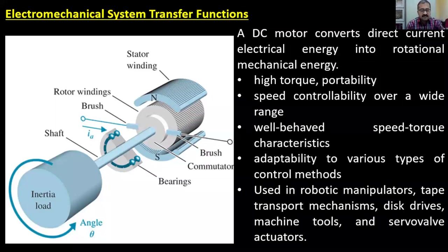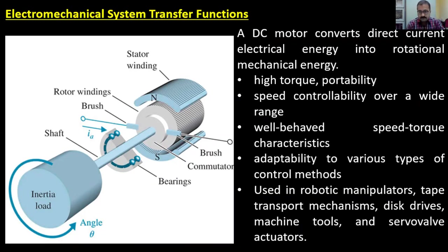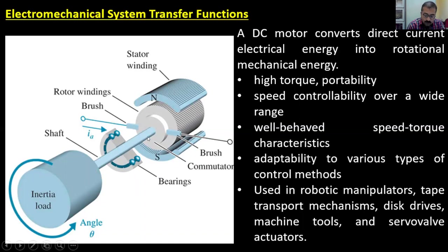For electromechanical system transfer functions: here we have a DC motor coupled to a mechanical load. This DC motor has two windings — a field winding and an armature winding. The field winding produces the magnetic flux within which the armature rotates. The motor is coupled to the mechanical load through a shaft, which is driven by the DC motor.